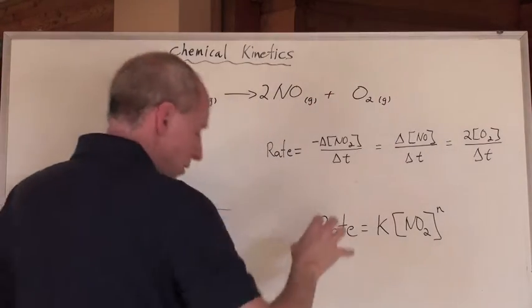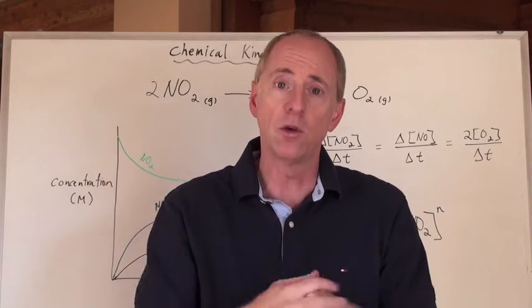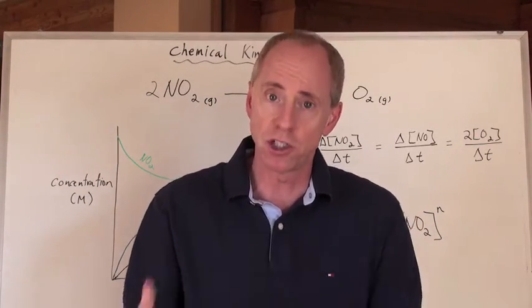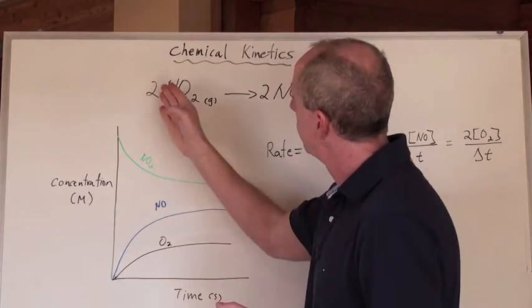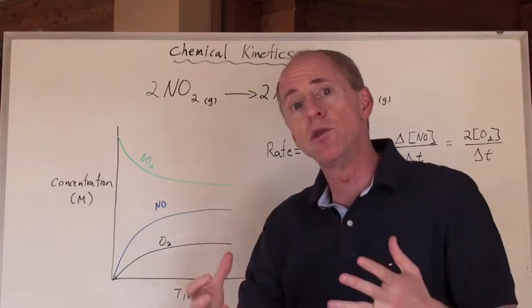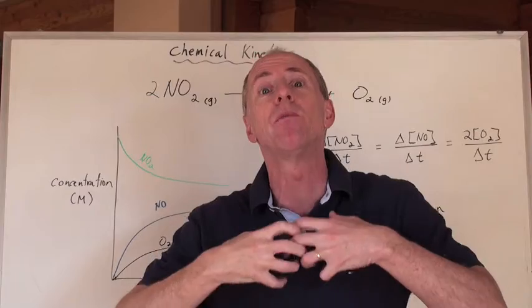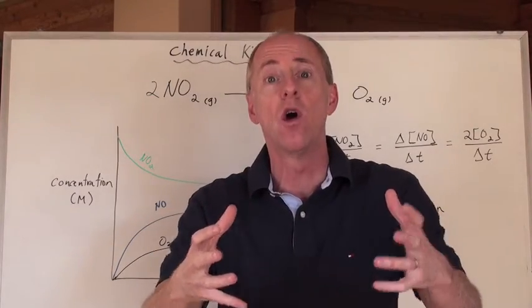And so this reaction is taking place, let's say in a reaction vessel, so we've got it in a closed system so we can measure certain changes. Well, let's take a look at what's going to happen when the reaction proceeds with an initial concentration of NO2 that's present, and no NO and O2 initially present, and then we allow the reaction to take place over time.